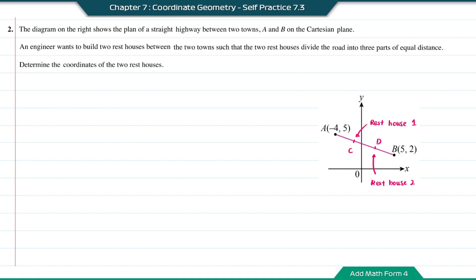Let's say I label rest house 2 as D. First, to find the coordinates of rest house 1, the ratio AC will be equal to 1, and from C to point B this will be equal to 2. So the coordinate C will be: 1 times 5 plus 2 times negative 4, divided by the total ratio which is 2 plus 1.